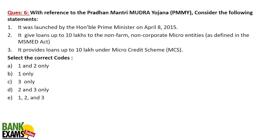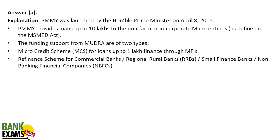With reference to Pradhan Mantri Mudra Yojana — it was launched by the honourable Prime Minister on 8th April 2015. It gives loans up to 10 lakhs to non-farm, non-corporate micro entities. Regarding micro credit scheme: it provides loans up to 1 lakh under the micro credit scheme, not 10 lakh. So the statement that it provides loans up to 10 lakh under micro credit scheme is incorrect.